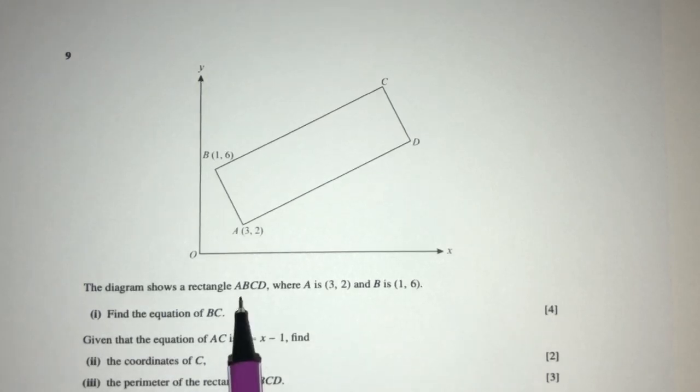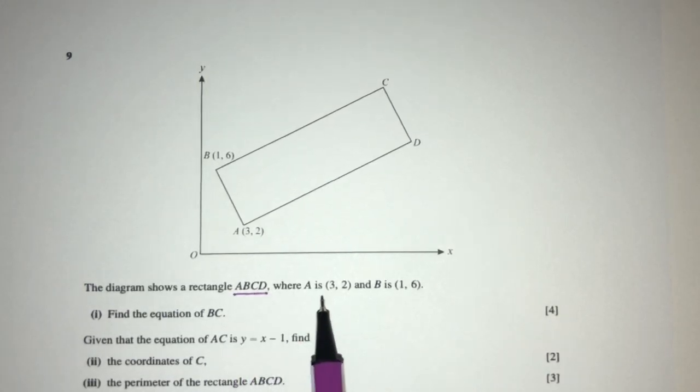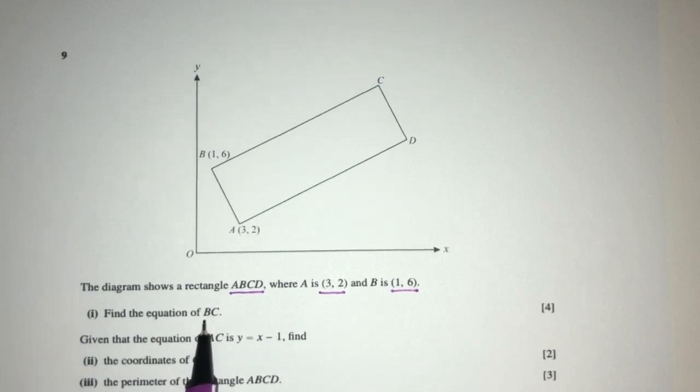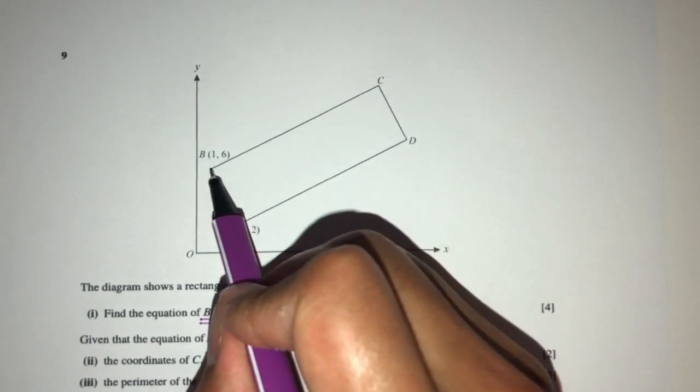The diagram shows the rectangle ABCD, where A is (3,2) and B is (1,6), as given to you by the diagram. Now part one, find the equation of BC. So pretty easy, let's first find the equation of BC.